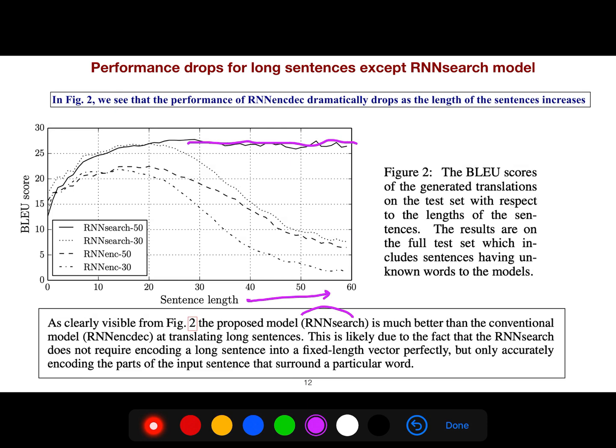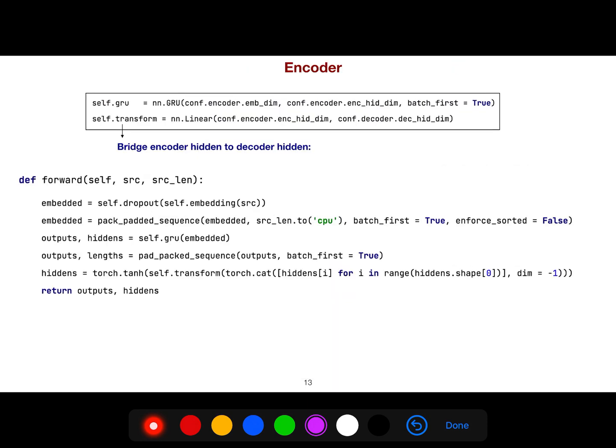Because in RNN search, 50 is here, is going up. So the performance is not reduced. As the sentence length grows, it is still good because the performance is not dropped.